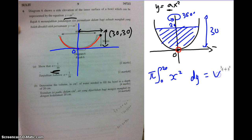So you just substitute whatever you have here. Since we got the equation, which is y equals to 1 over 30 x-square, so x-square is just equals to 30y. So I can just substitute in here, which is 30y, then dy then equals to volume.